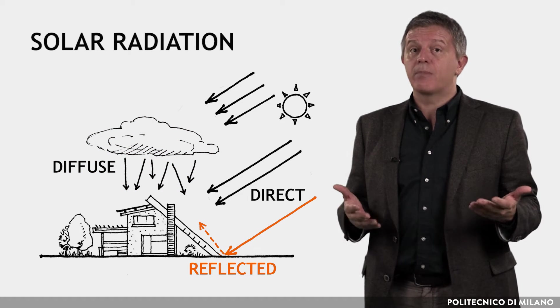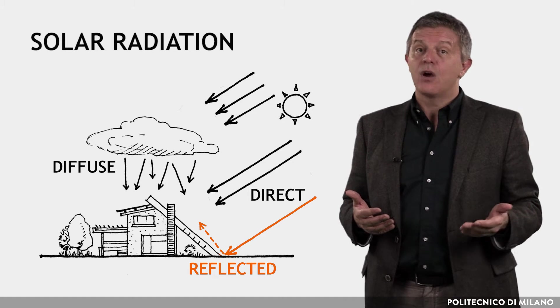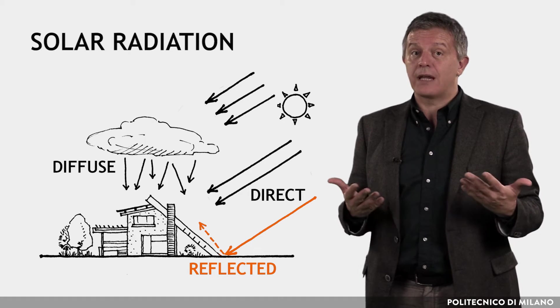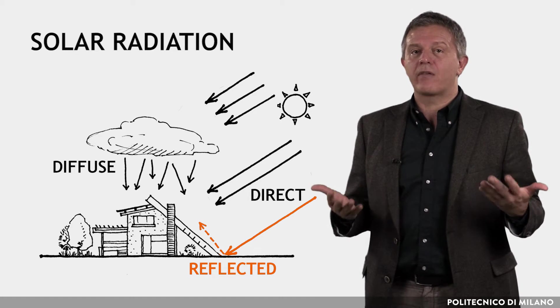The reflective radiation depends on the mutual spatial disposition of the absorbing and the reflective surface, on the incident radiation onto the reflecting surface, and on the albedo coefficient of the reflecting surface.